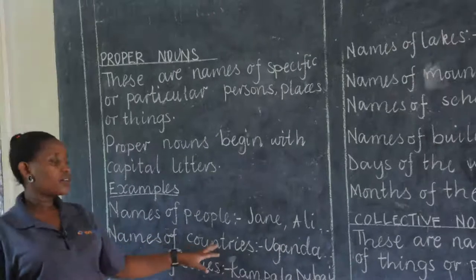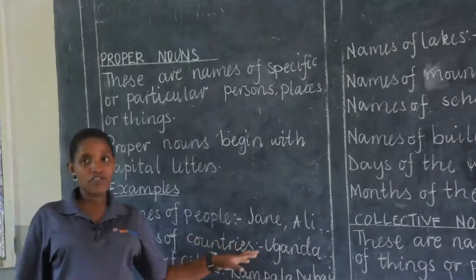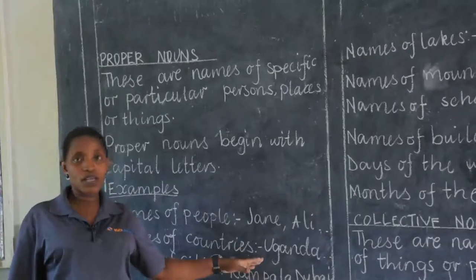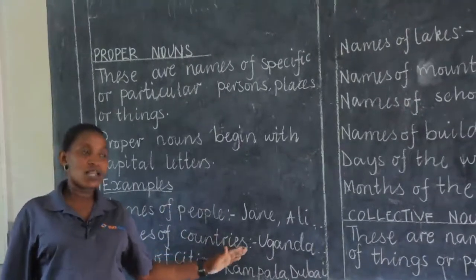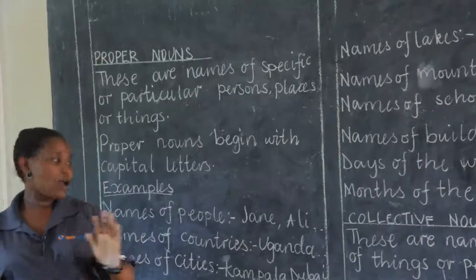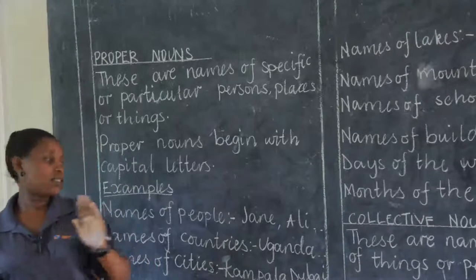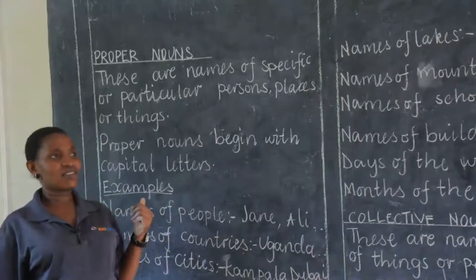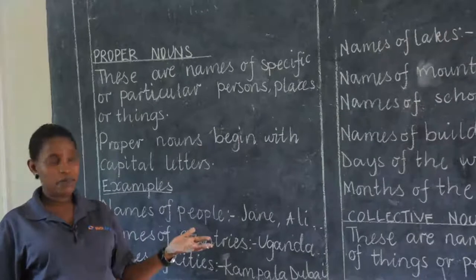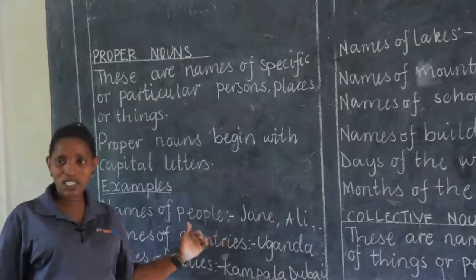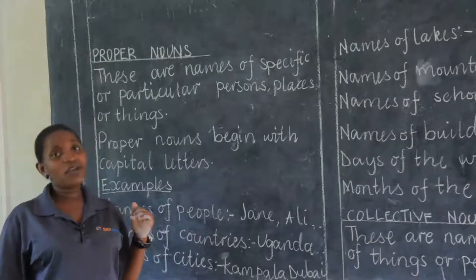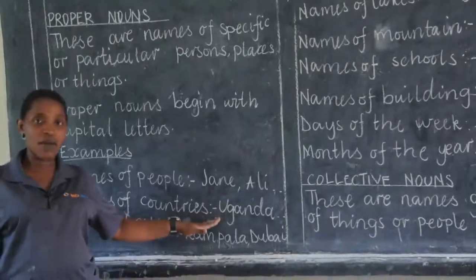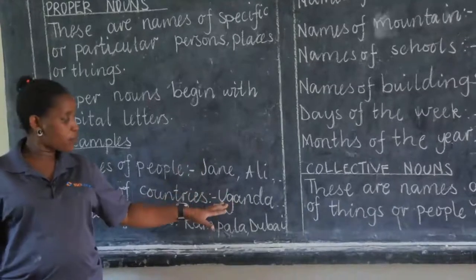Then you come to names of countries, like our own country Uganda. When you want to write Uganda, begin with a capital letter. When you want to write Kenya, America, or England, begin with a capital letter, because they are proper nouns. When you say 'countries,' no one is going to penalize you, because you are not specific. But when you say 'I come from Uganda,' that is a proper noun and it goes with a capital letter.